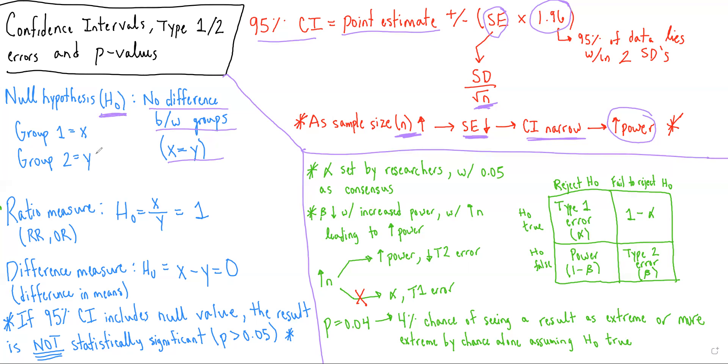Often when people think about the null hypothesis, they think that the null hypothesis should be an answer of one. But something that's really important is that the null hypothesis depends upon whether you're dealing with a ratio measure or a difference measure. So if you're dealing with a ratio measure, such as a relative risk or an odds ratio, in that case, the null hypothesis would be one because we're looking at x over y. So if we assume x equals y, that value would be one. However, if we're looking at a difference measure, such as a difference in means, such as comparing the mean systolic blood pressure among patients getting placebo compared to patients getting an antihypertensive medication, in that case, we're doing x minus y. So if x equals y, the null would actually be zero.